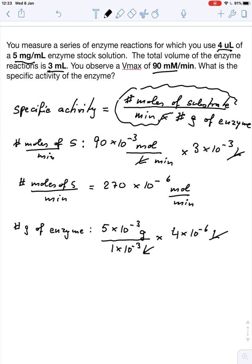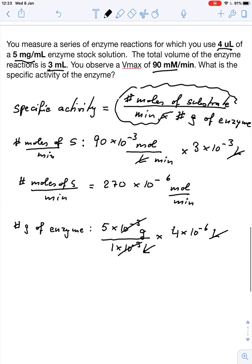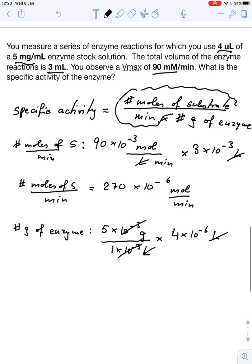And again, the liters cancels out. Actually, the 10 to the minus 3 cancels out. And I end up with number of grams is 5 times 4 times 10 to the minus 6. So that would give me 20 times 10 to the minus 6 grams that I have here.